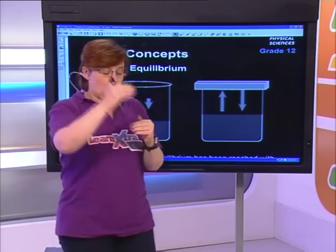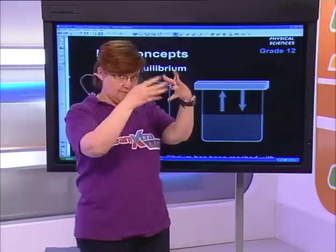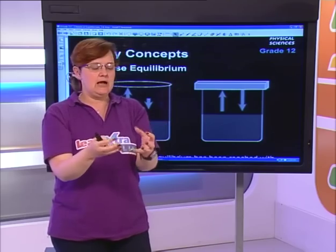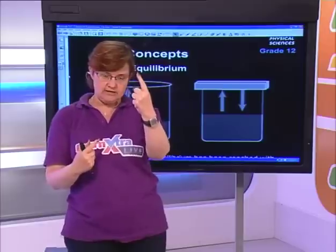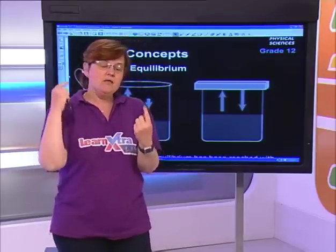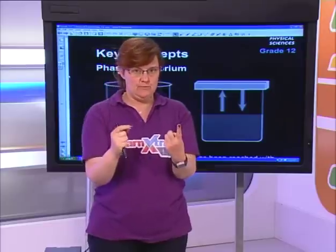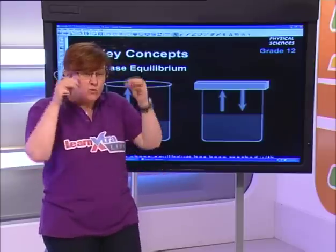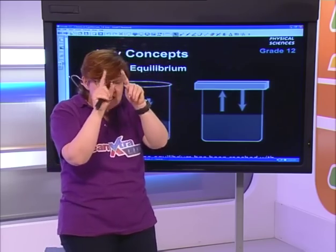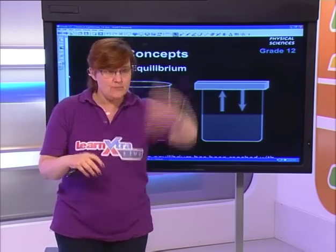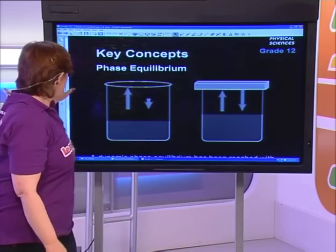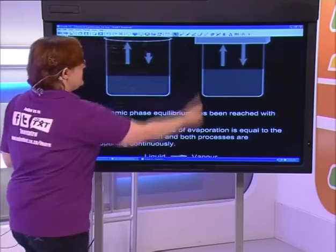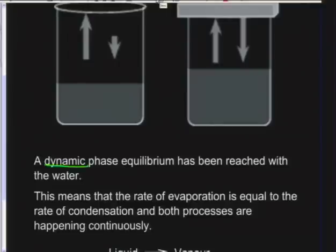If you watched a closed system, you'd see the water level drop a little and then stay constant. The water level drops because evaporation takes place. But in a closed system, that water vapor has nowhere to go — it touches the sides and lid, condenses, and becomes liquid again. So we now get a process where evaporation and condensation are both happening.